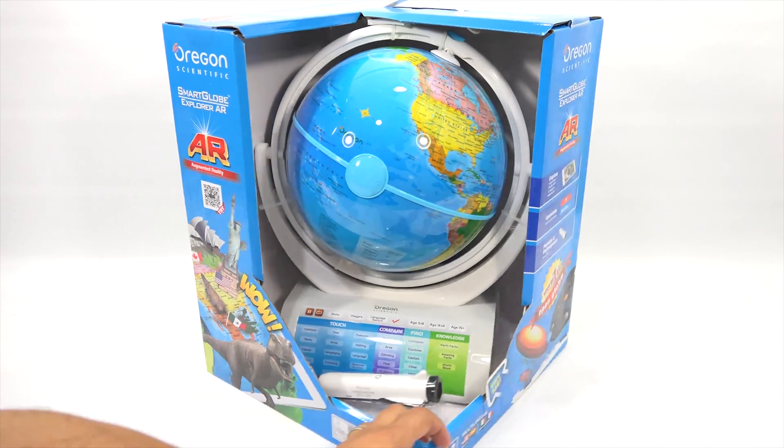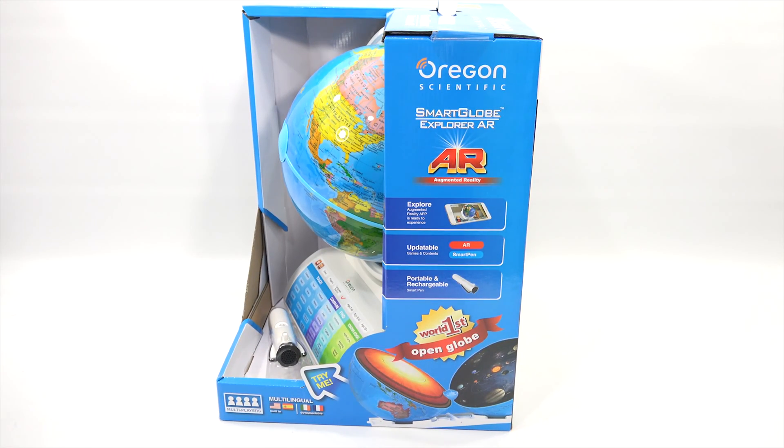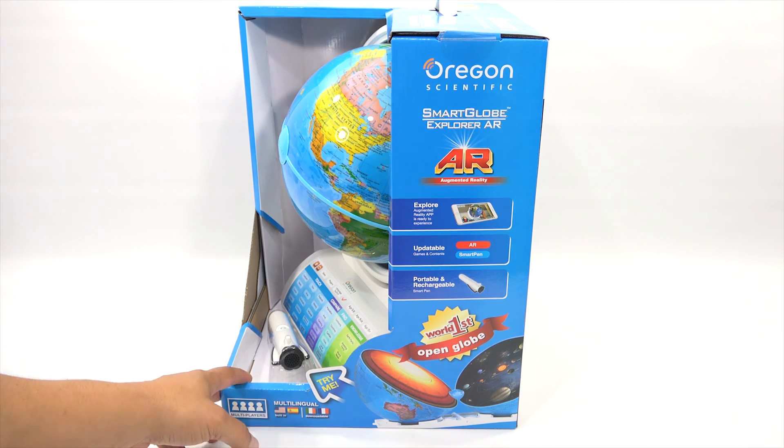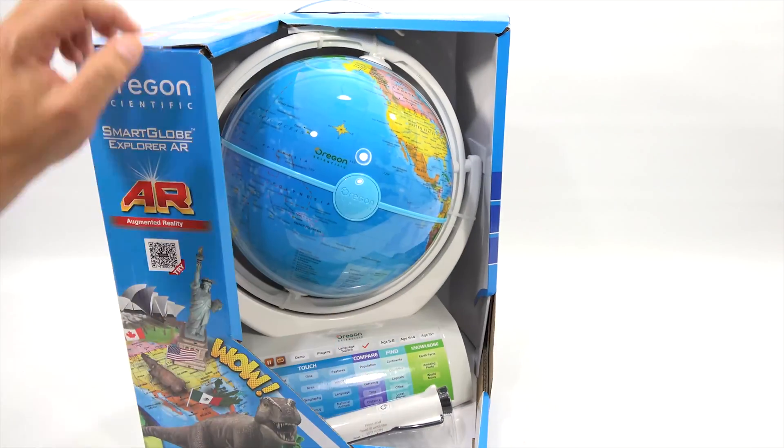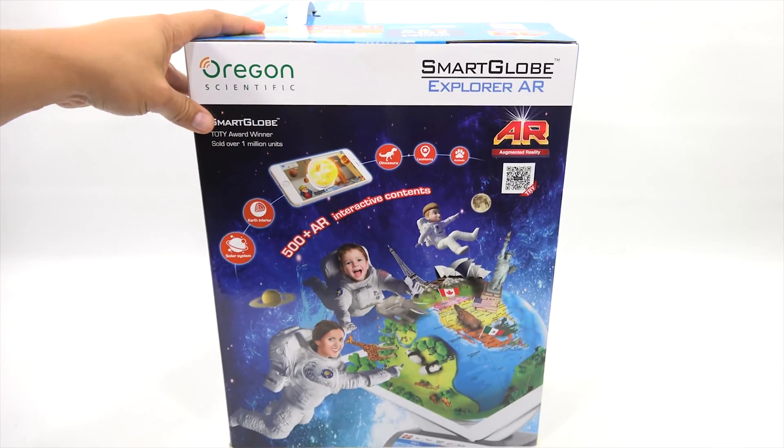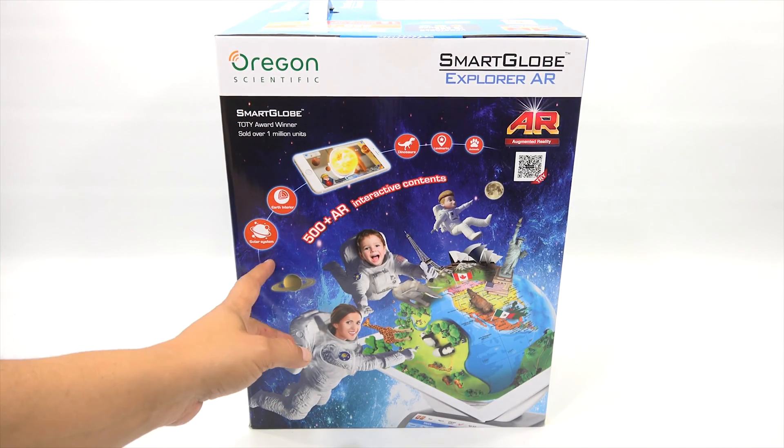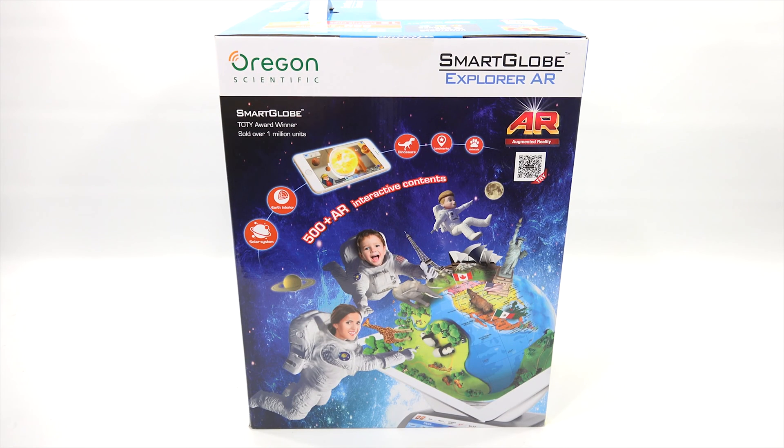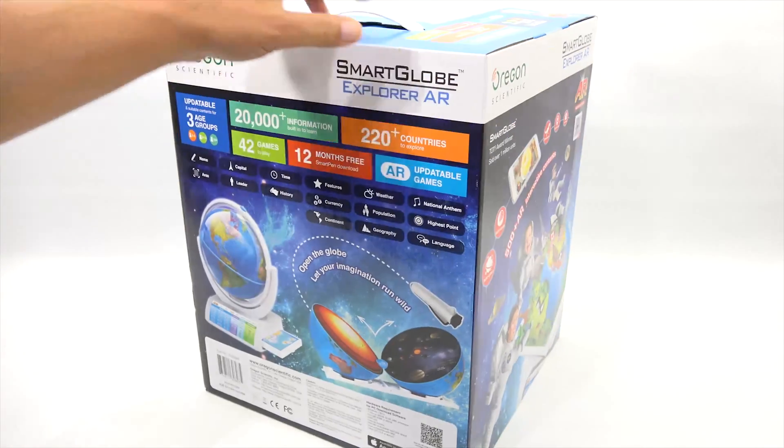Let me turn this on the side here. You will see Explore Augmented Reality app is ready to experience. Updateable games and content. Portable and rechargeable on the little smart pen, which looks like a space shuttle, which is kind of neat. And then this is the other side. Kind of takes you through the solar system, the Earth's interior, your device, dinosaurs, landmarks, and animals, along with learning about the geography and everything else on the Earth.